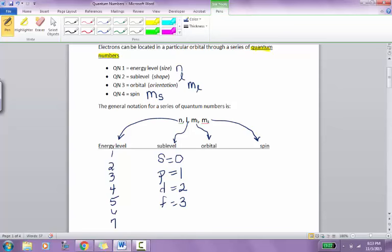Quantum number 3 has to do with the orientation, or the orbital. So with the s sublevel, there is only one orientation. It's a sphere. So that number, that third quantum number, if the second one is a 0 for s, then the third quantum number must also be 0. If it's a p sublevel, or a 1 for the second quantum number, well then our orbital could take on 3 orientations. So we need 3 numbers. It could be negative 1, it could be 0, or it could be positive 1.